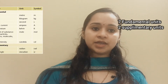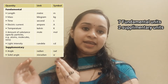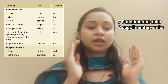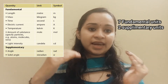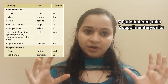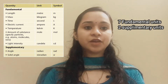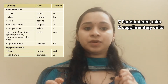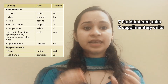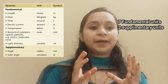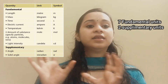The seven fundamental units are as follows. First: Length — the unit name is meter, and the symbol is m. Second is Time — second is the unit of time, and the symbol is small s.